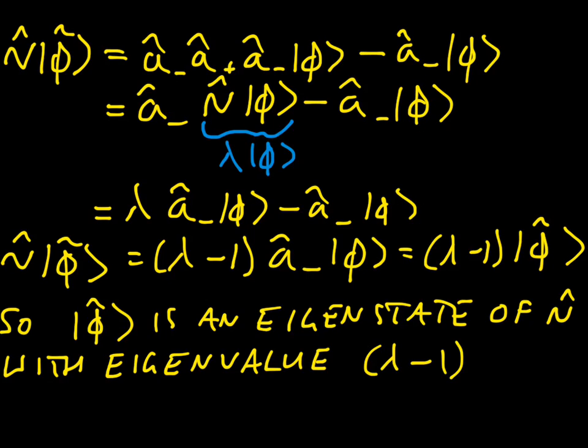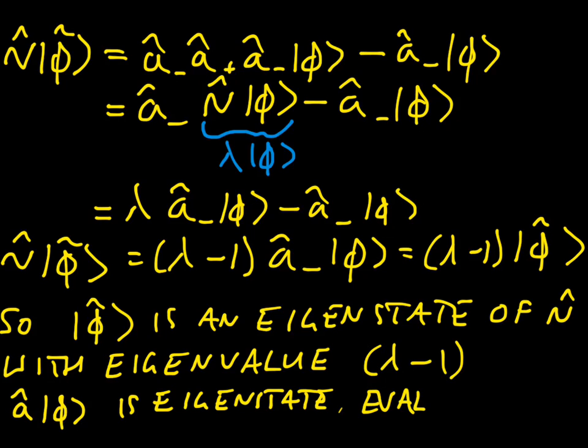You can do a very similar piece of maths. Of course, the only difference is that you're going to end up with the commutator the other way around to look at what happens when you act with n-hat on a-plus on phi. And by doing that, you can show that a-plus on phi is also an eigenvector, an eigenstate, with eigenvalue, which I will abbreviate to eval, lambda plus 1. Let's go to a third page.